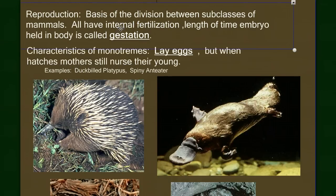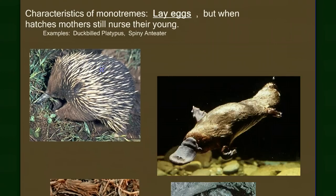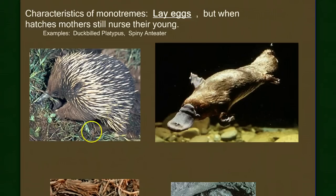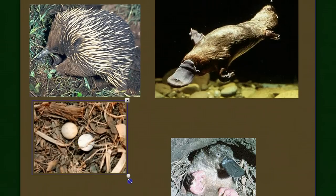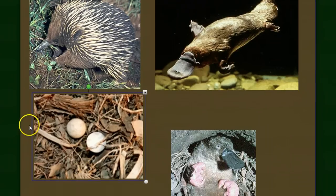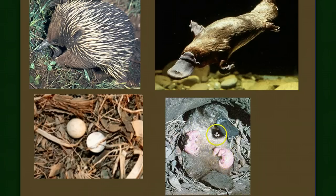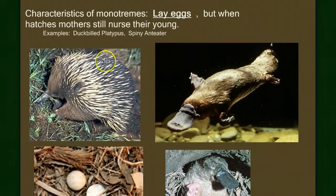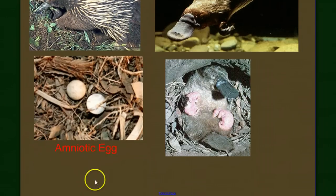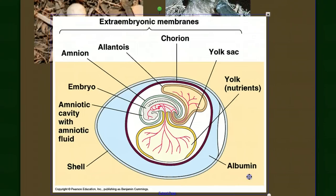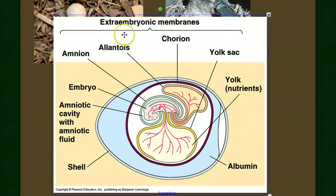The first subclass is the monotremes — the egg-laying mammals. We don't think of mammals laying eggs, but they do, and the egg they lay is reptilian in nature: a leathery egg rather than a hard-shelled egg. When the young hatch, they still nurse from the mother's mammary glands. The only known examples of monotremes are the spiny anteater (echidna) and the duck-billed platypus. This egg is an amniotic egg with the same extraembryonic membranes seen in bird and reptile eggs: the amnion, allantois, chorion, and yolk sac.